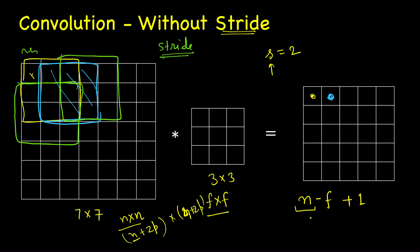This n and n can be different also like n1 and n2, but let's take n constant for simplicity. So if we have padding this value changes to n plus 2p minus f plus 1.